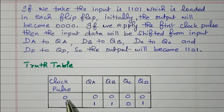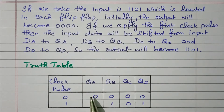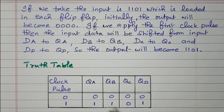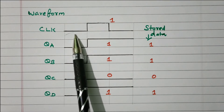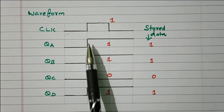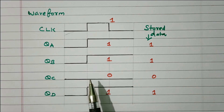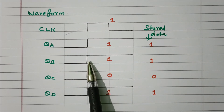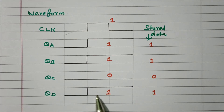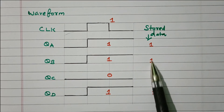The truth table shows: at clock pulse 0, all outputs are 0. At the first clock pulse, the input 1101 is loaded into the flip-flops, and the same is reflected as output — QA is 1, QB is 1, QC is 0, QD is 1. The waveform confirms this: initially all are 0; after the first clock pulse, the first flip-flop gets 1, second gets 1, third gets 0, and fourth gets 1. So QA and QB are high, QC is low, and QD is 1. The data 1101 is what we are transferring or storing.